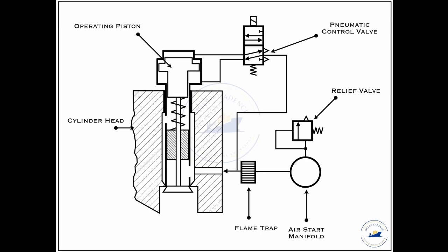To understand this better, let us first analyze the starting air valve in its closed condition. The air from the air start manifold comes to the 30 bar air inlet at the starting air valve and awaits its entry into the unit.